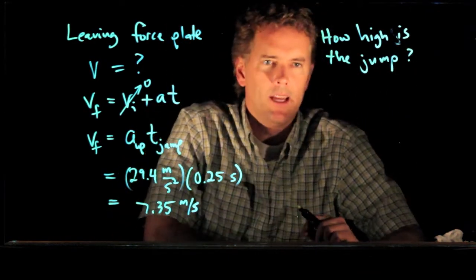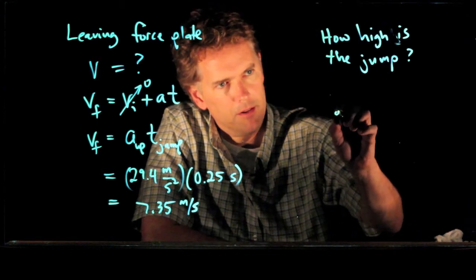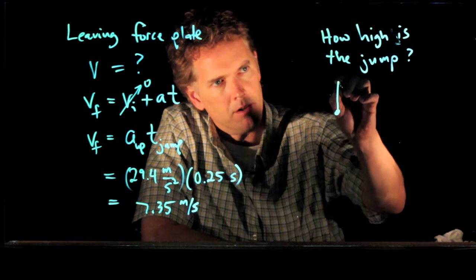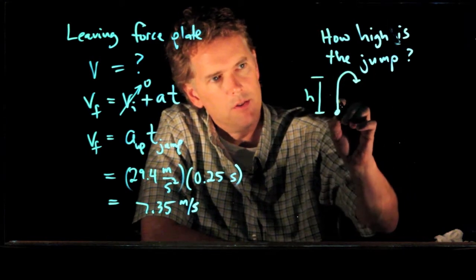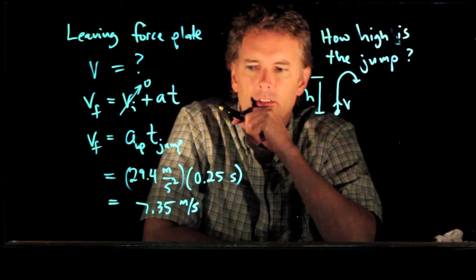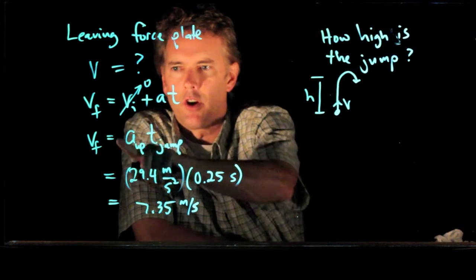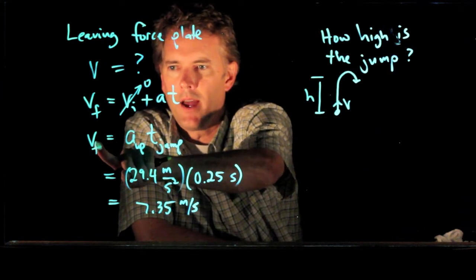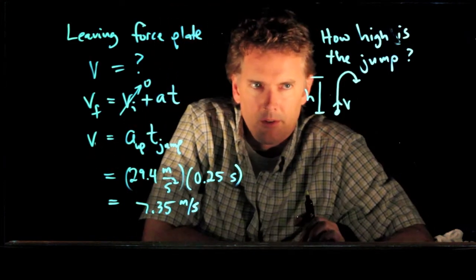All right, well, again we can go back to the kinematic equations. And if we think of the person launching themselves, they're going to go up to a height h if they left the ground at V. And we know what that V is. We have it right here. Let's actually just call it V. We won't call it V sub f because we don't want to be confused when we write this equation over here.